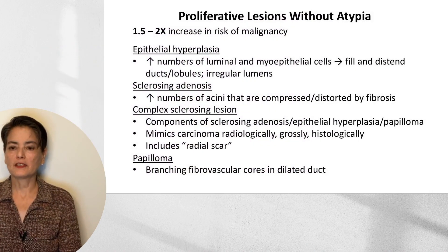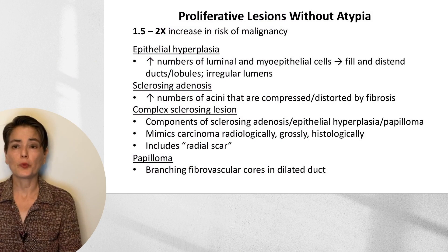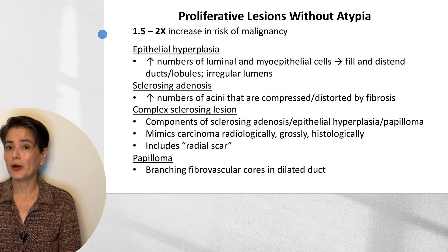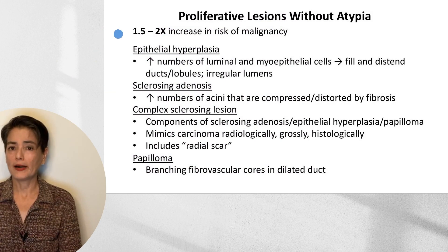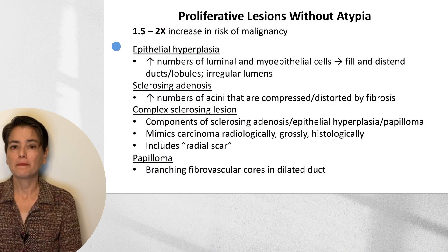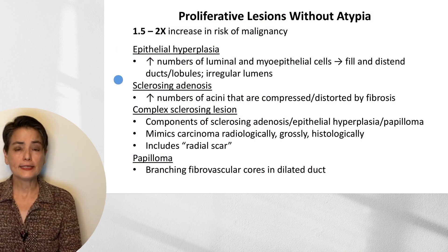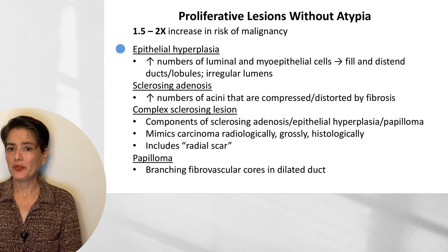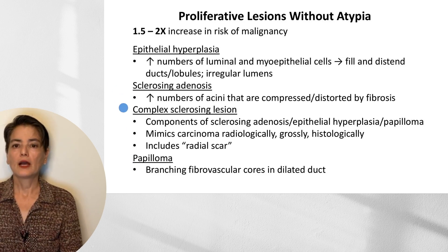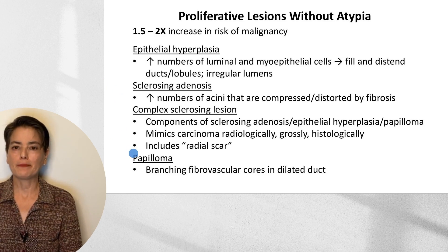This brings us to something slightly more important: our proliferative lesions without atypia, because now we do have a one and a half to two-fold increase in risk of malignancy. The four entities to know are epithelial hyperplasia, sclerosing adenosis, complex sclerosing lesion, and papilloma.